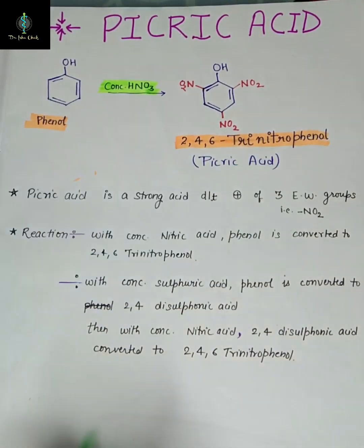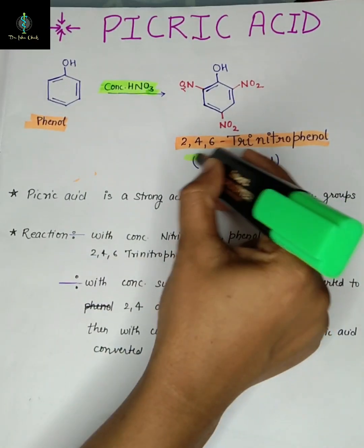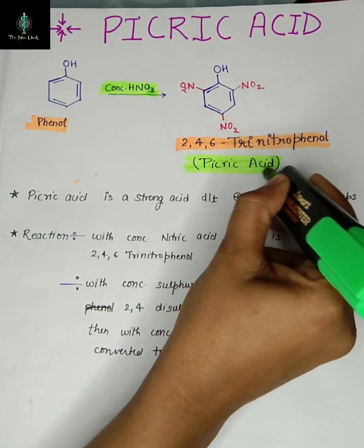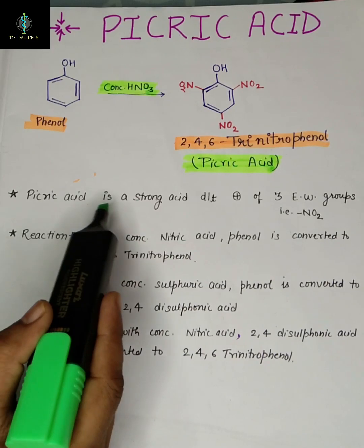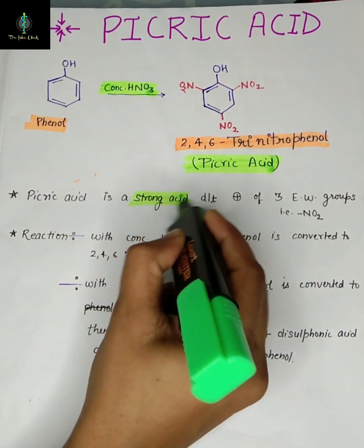2,4,6-trinitrophenol is commonly known as picric acid. Now, picric acid is a strong acid due to the presence of three electron withdrawing groups, that is NO2.